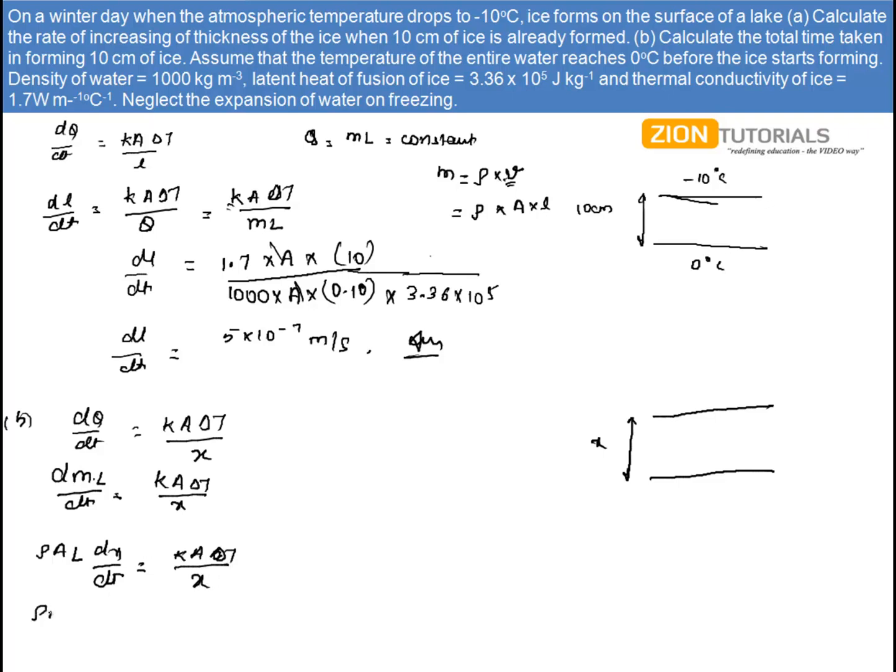So on solving this, I get rho A capital L by KA. Now A is cancelled over both sides. dx x and delta T into dt.